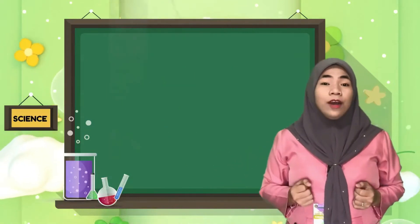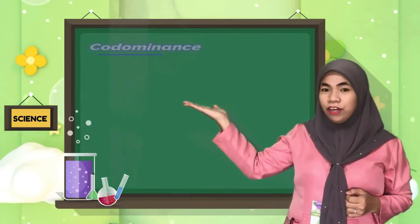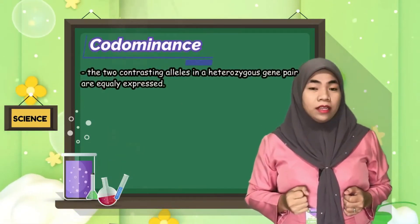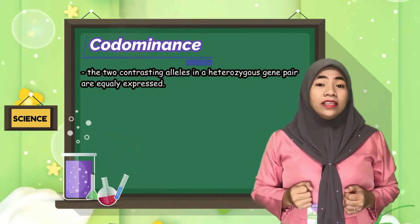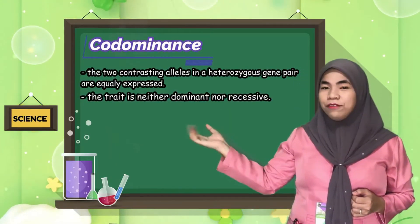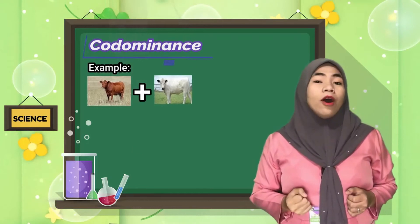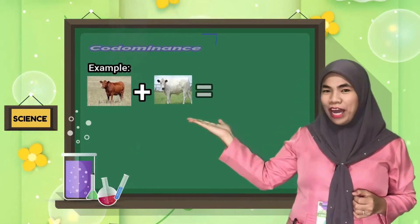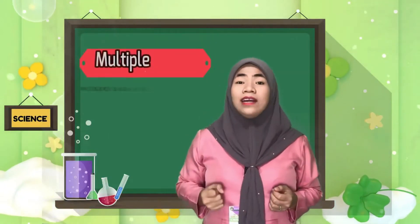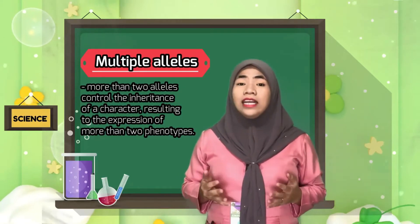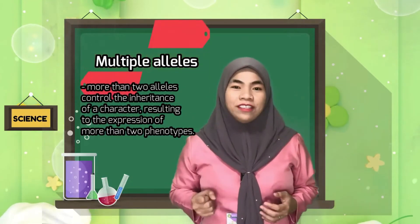In the previous lesson, you have learned that in codominance, the two contrasting alleles in a heterozygous gene pair are equally expressed. Therefore, the trait is neither dominant nor recessive. For example, red cows crossed with white cows will have offspring that are brown cows. Today, you are going to learn that there are times when there may be more than two types of alleles that control a certain trait, and this leads to the expression of more than two phenotypes.